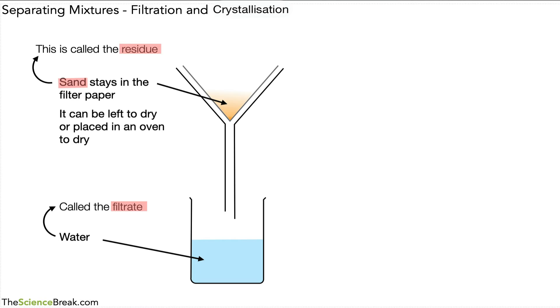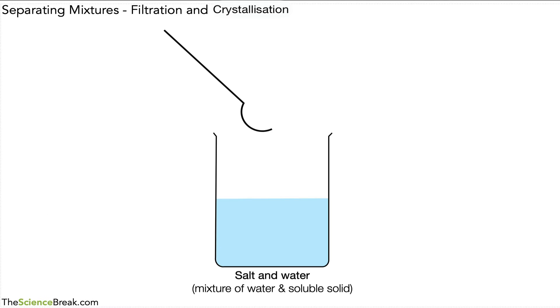Next, we could take a look at how we separate a substance that can dissolve in water. We've got a mixture of salt and water, so that's a mixture of water and a soluble solid. We can quickly make up our soluble solid solution by adding some salt to some water, give it a little stir, and there we have our salty water.